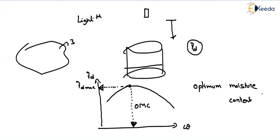Whatever soil we want to compact, we first study it in the laboratory — by changing water contents we obtain dry density and find at what water content we achieve the maximum dry density. We note that value and add the same moisture content in the field to achieve maximum dry density. If water added is below OMC, it is called dry of optimum; if above OMC, it is called wet of optimum.